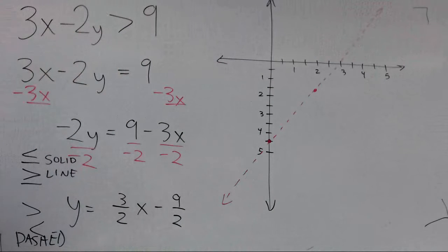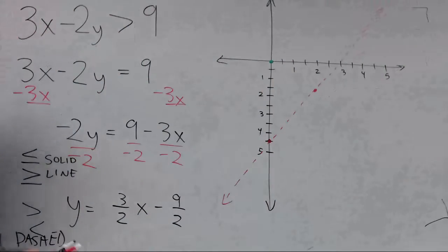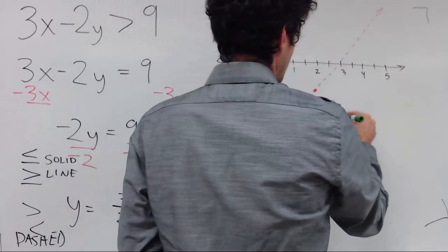So last step is to pick any point not on the line and test it in the original inequality. So zero zero is a good point to pick, unless that's on the line. I usually pick zero zero for a test point.